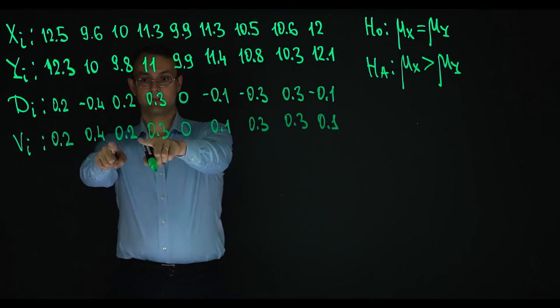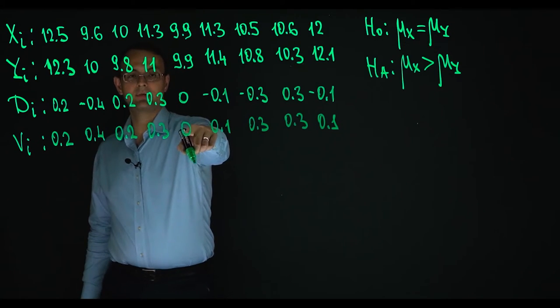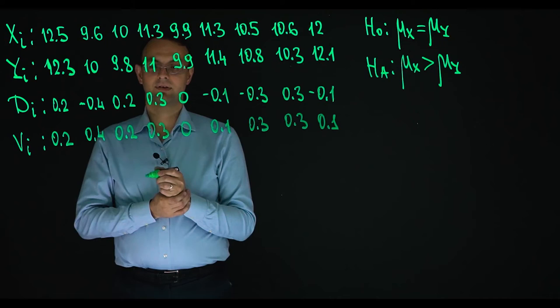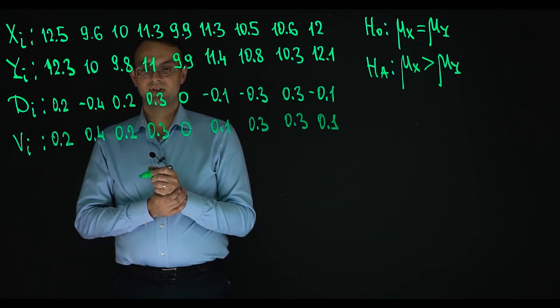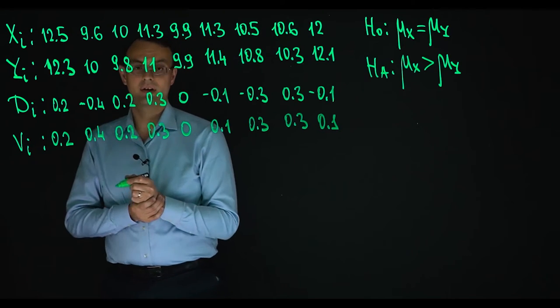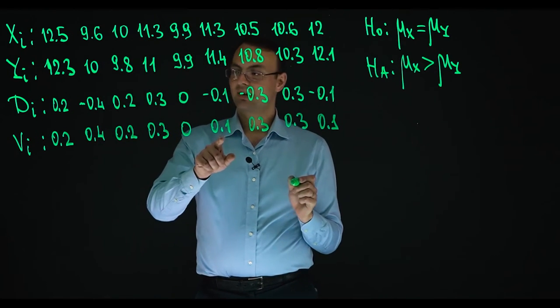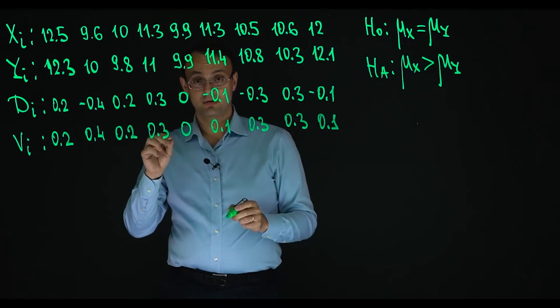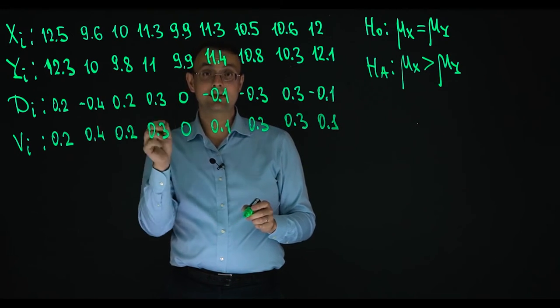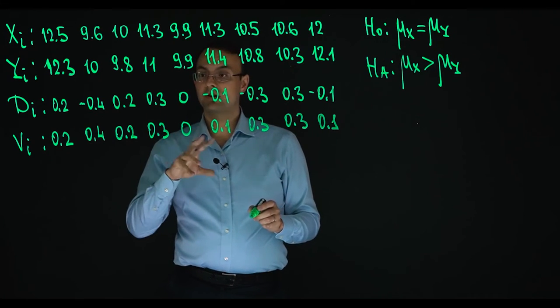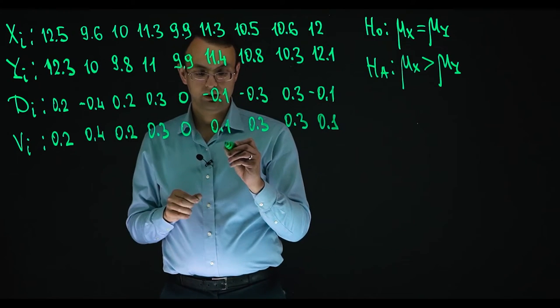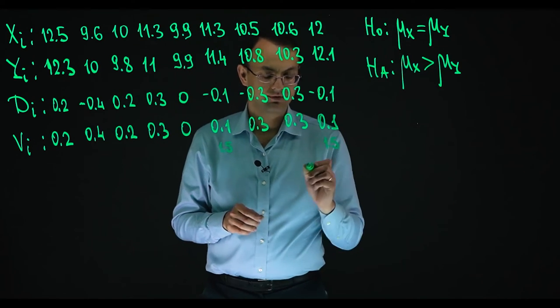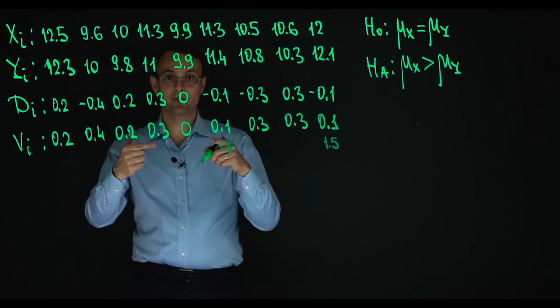Then we are to rank these Vs and zeros are excluded. So this V that is equal to zero is excluded from ranking. To rank means to numerate from the least one to the greatest one. And we see that there are equal values here. So the least ones are 0.1 and 0.1. So there are two equal values. If they were different, their ranks would be 1 and 2. And as they are equal, they will share this rank. So the rank will be 1.5 for both, between 1 and 2 as they shared the first and the second places.